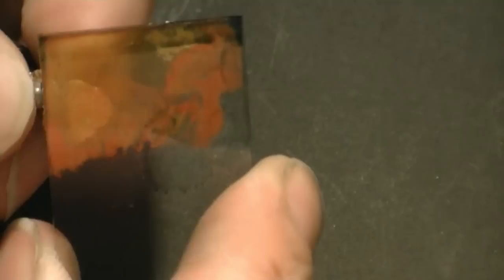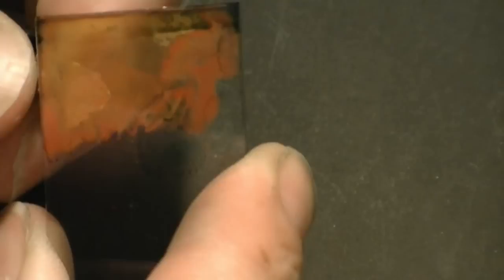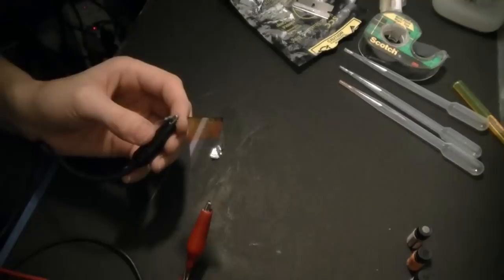I tried other work function metals for the cathode, and I found that they work too, just not quite as well as the gallium-indium. So, aluminum, tin lead solder, carbon, all of them seem to work a little bit. Zinc from a penny.